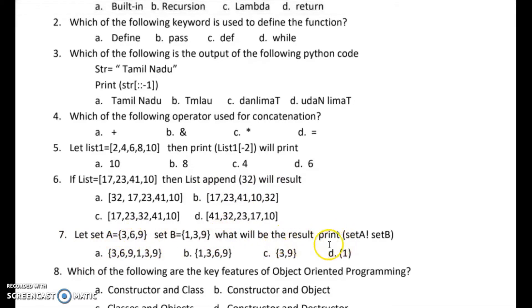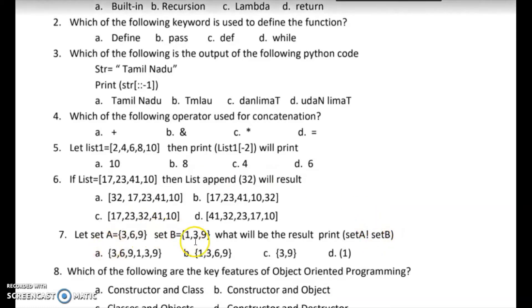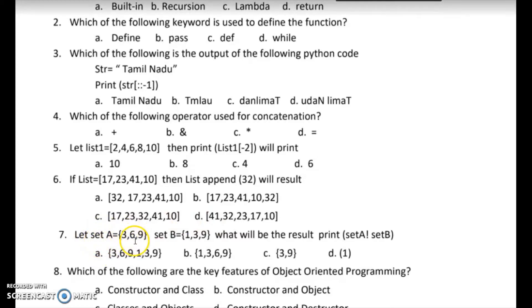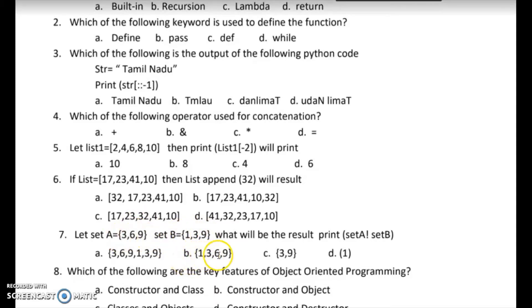Seventh question: what will be the result of print of set A with the vertical bar symbol — that is the union operator. So set A union set B. In a set, there are no duplicates, and the elements will print in sorted order. The union combines both sets, removing duplicates, and prints the result in order.